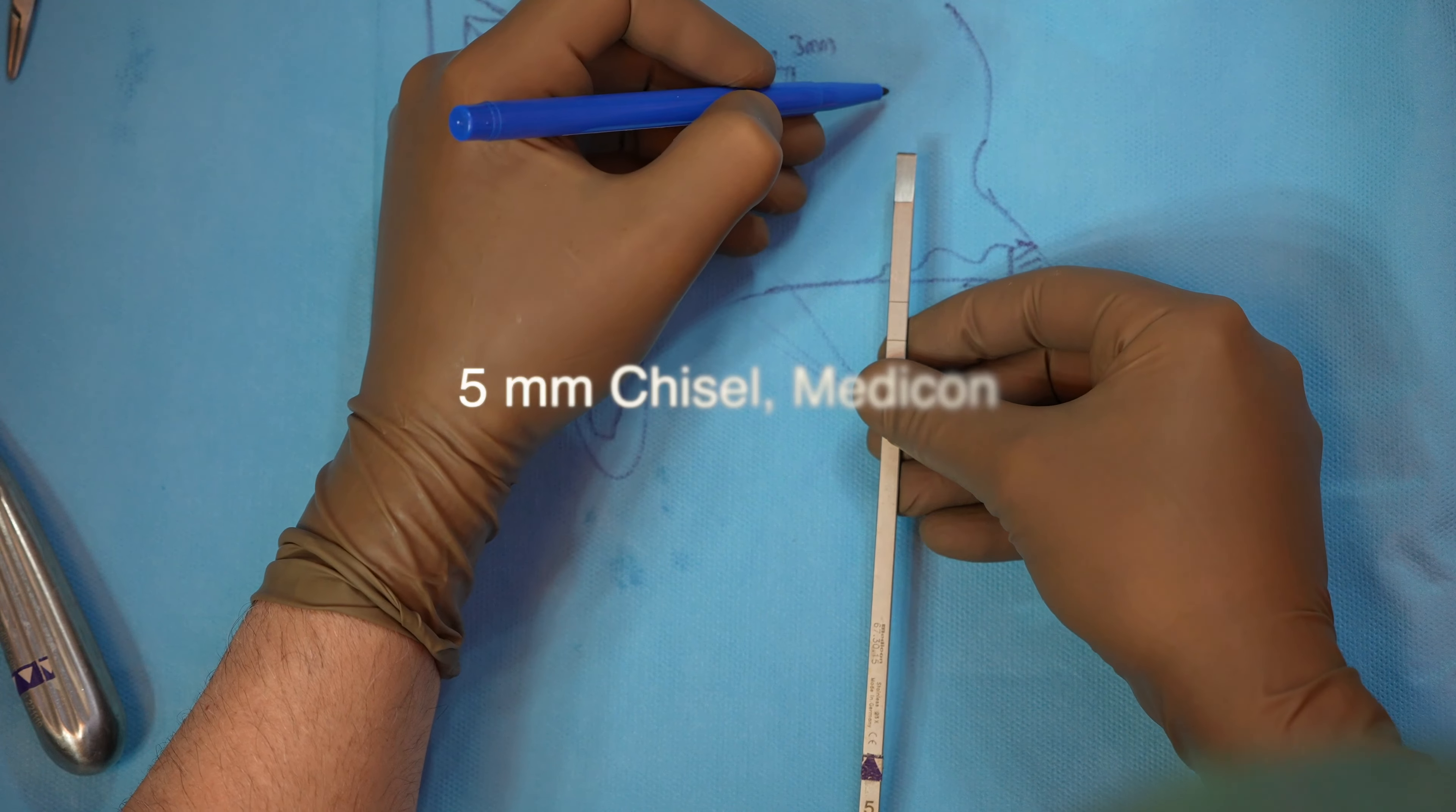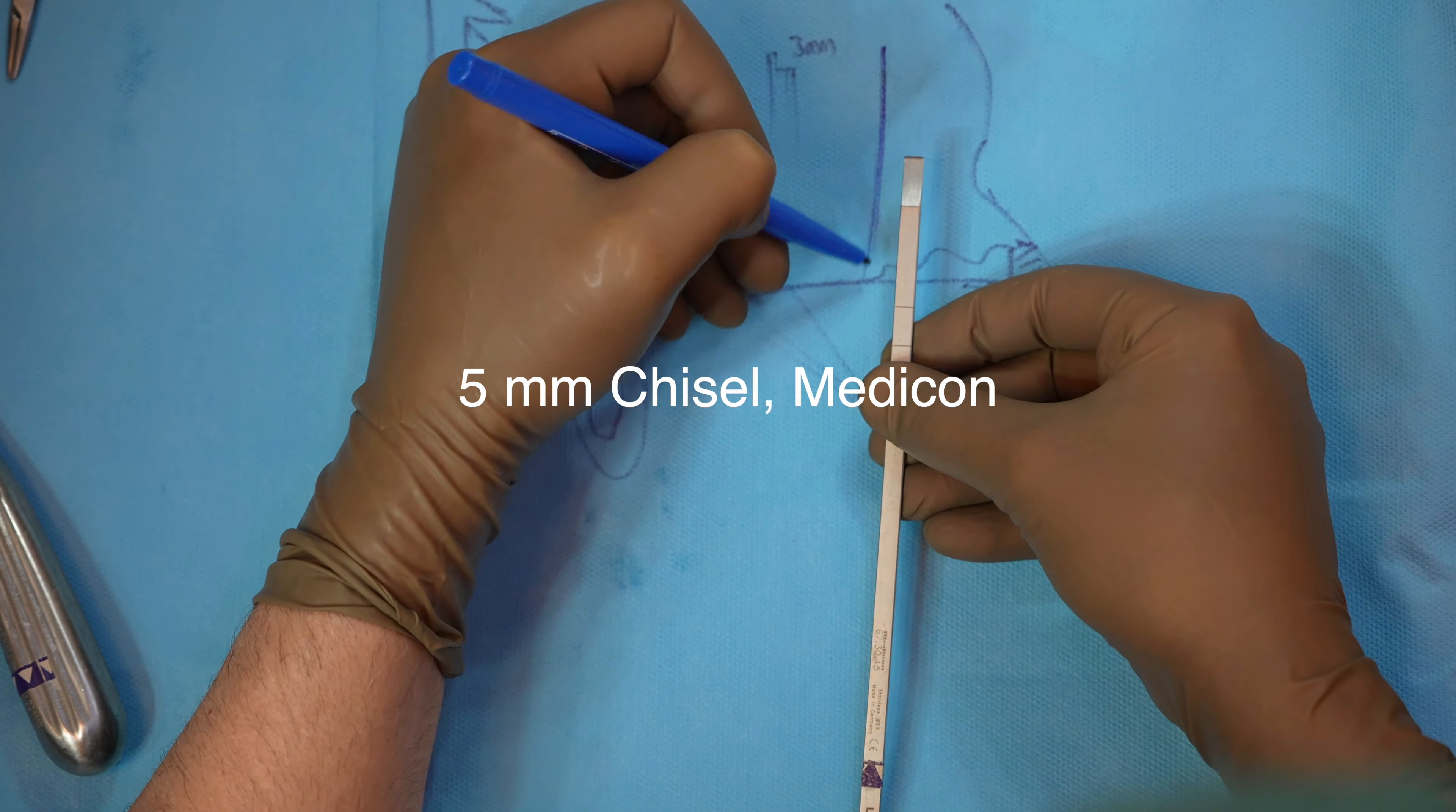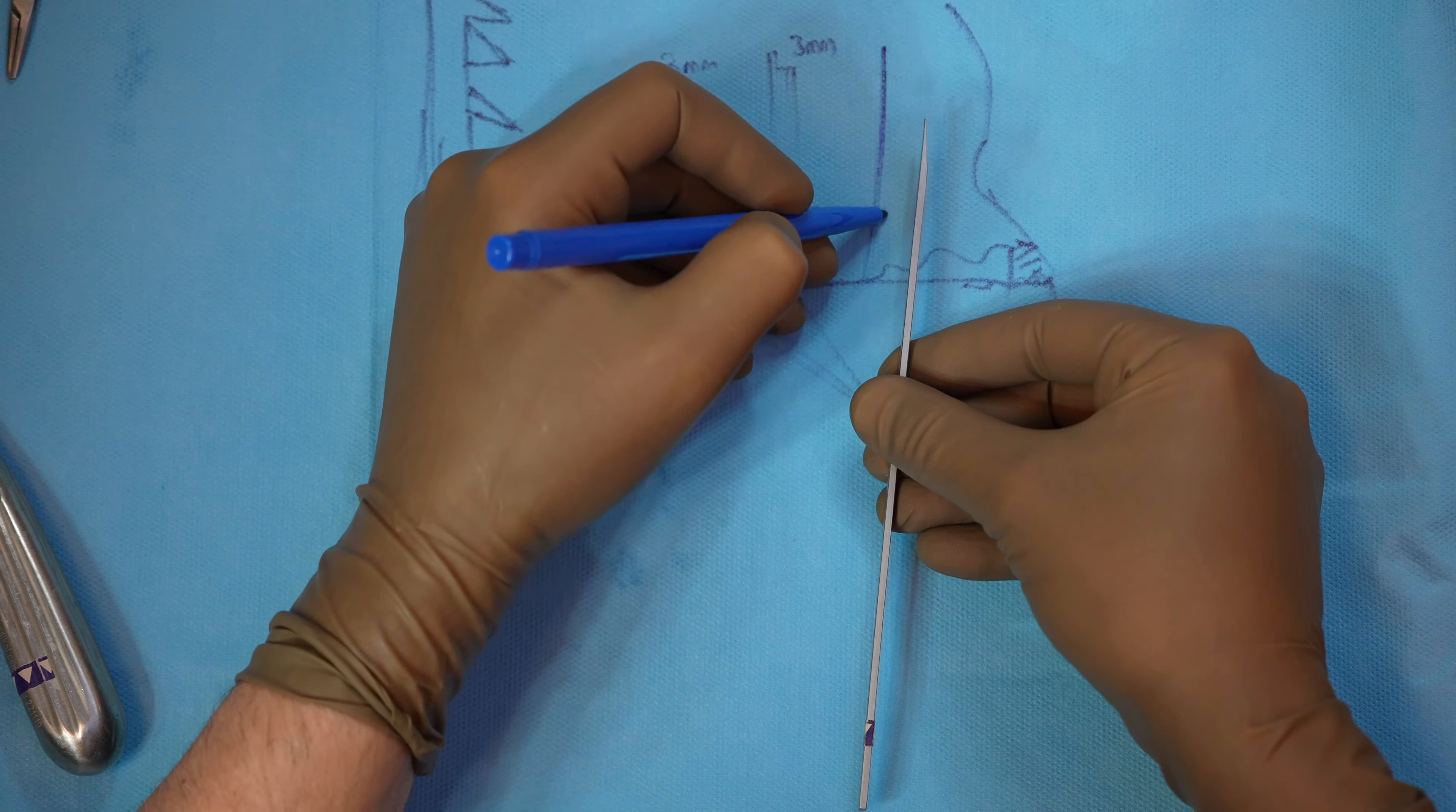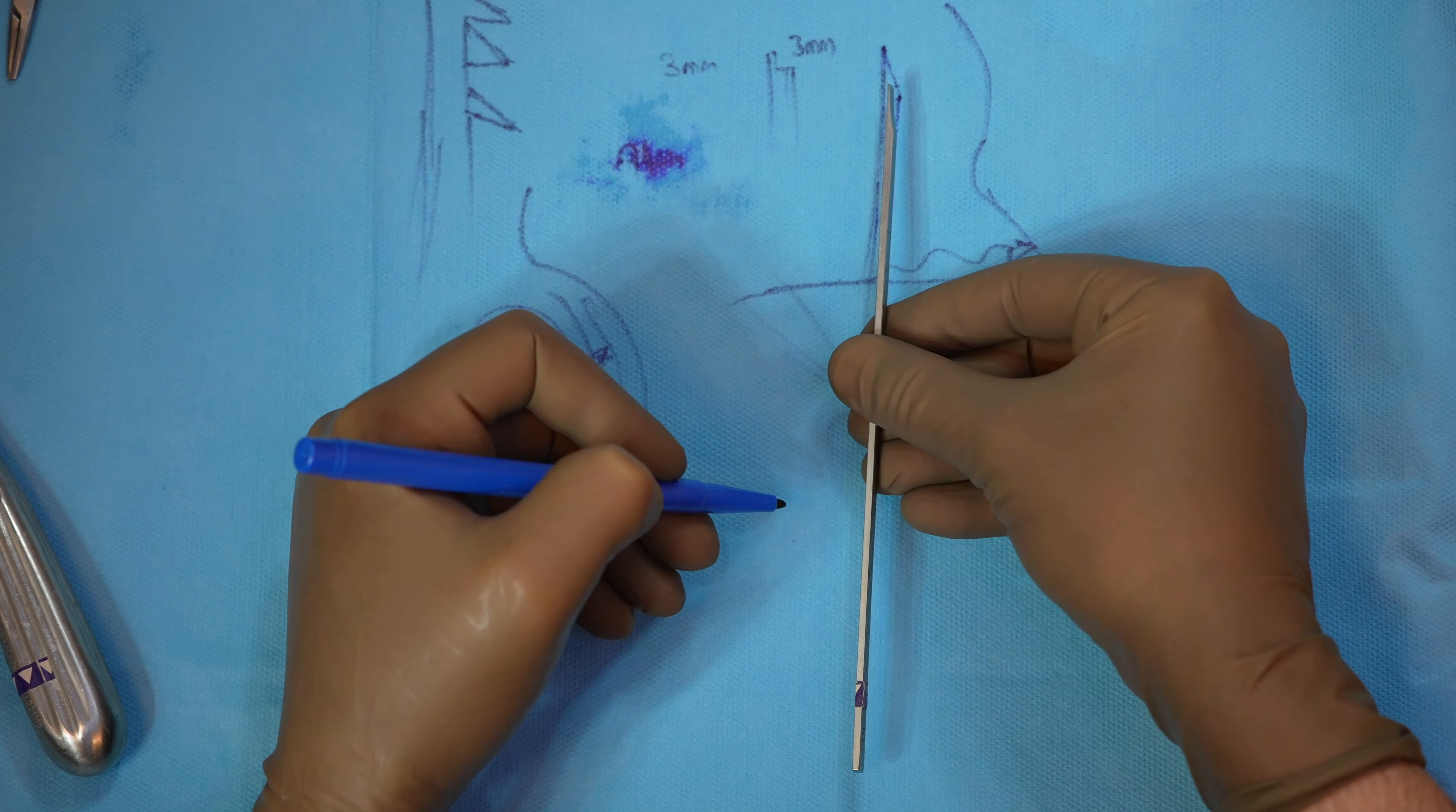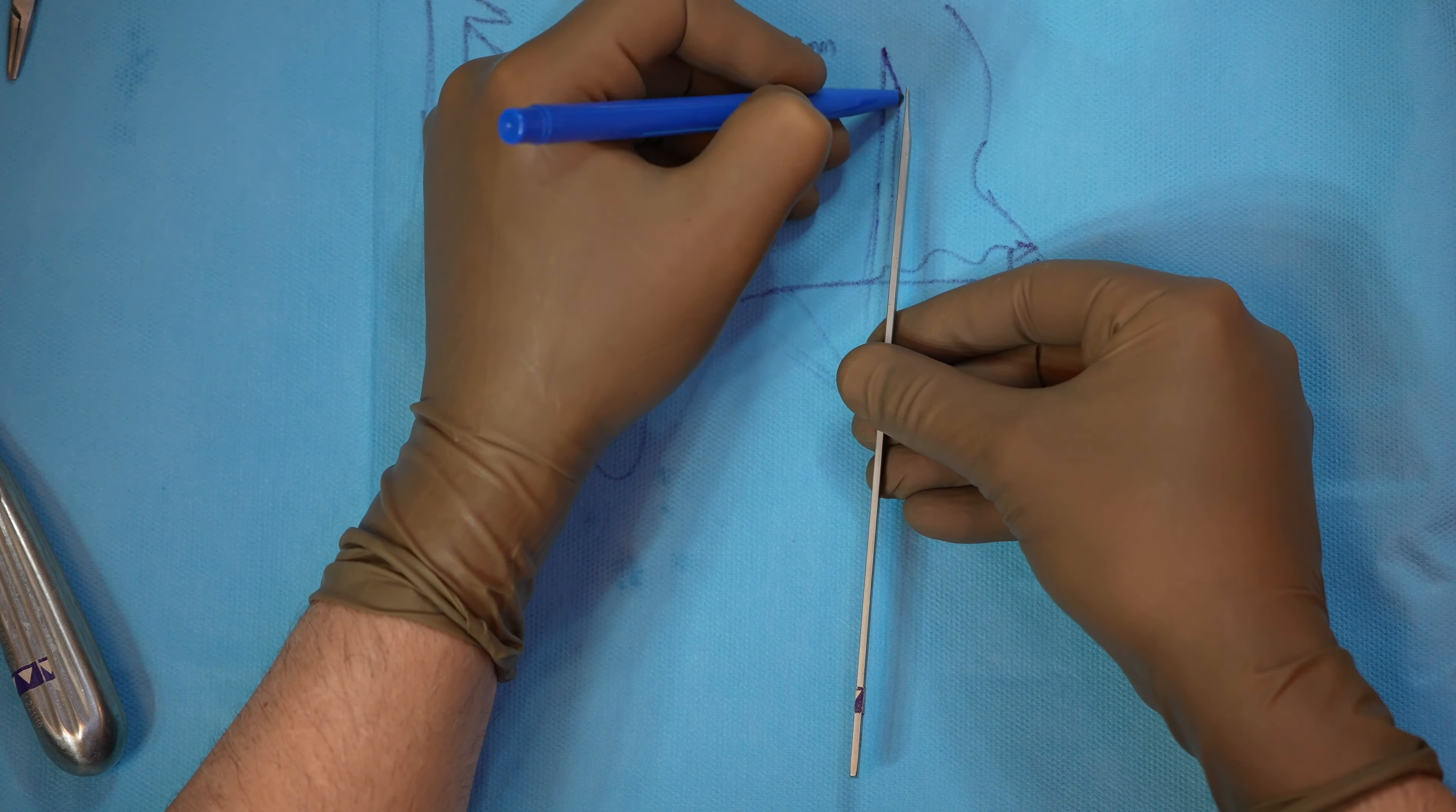That's 5mm Medicon chisel. I only sharpened once in 4 years. One side sharpened. So in close approach, you can use this direction and you can remove bone from the radix. This is a 5mm blade.